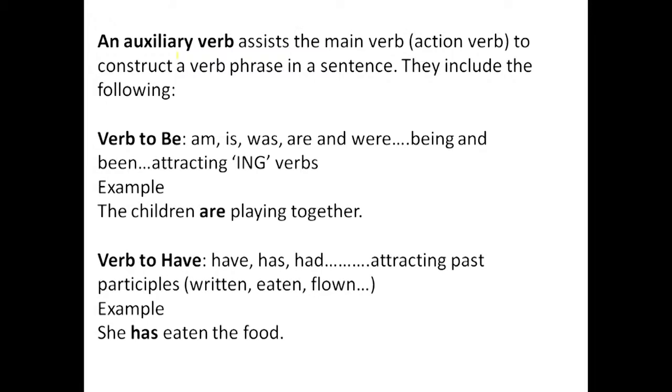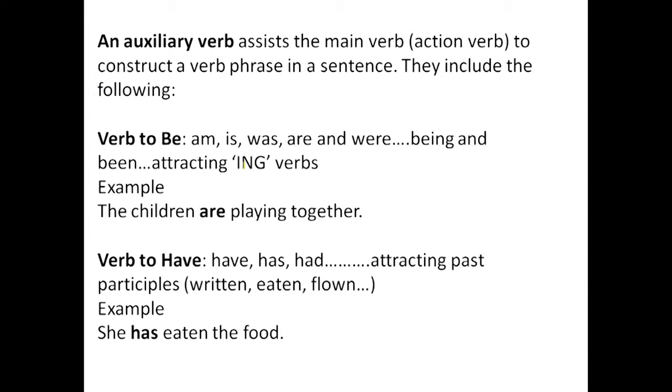The other kind of auxiliary verb is verb to have. When I say verb to have, I mean have, has, had. They could only be regarded as auxiliary verb if after has, had, or have, you have another verb. That other verb is supposed to be the actual verb. Together they give you a verb phrase. What they do — have, has, had — always attract the past participle of the verb.